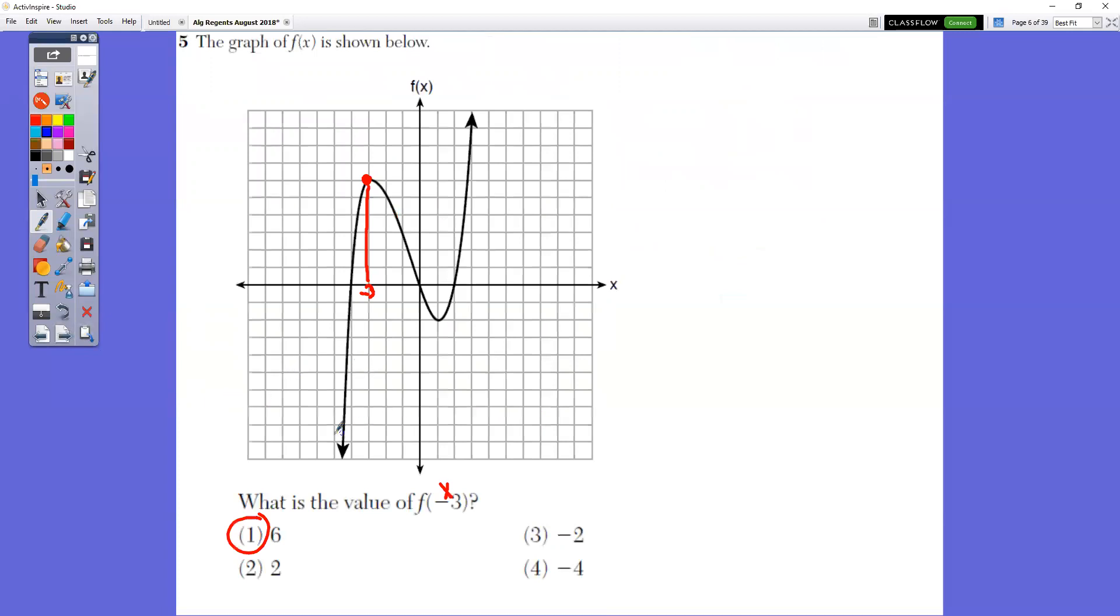In question number five, what is the value of the f of negative three? So here's where negative three is. Go straight up from there until you hit the graph. And that is at positive six, which is choice one.